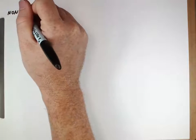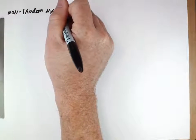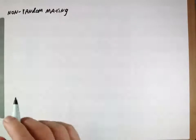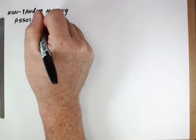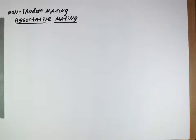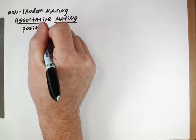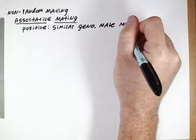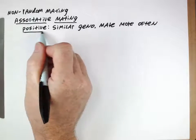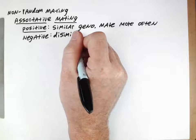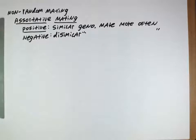Our next evolutionary process that we'll be looking at is non-random mating. You'll recall one of the assumptions of the Hardy-Weinberg equilibrium scenario was that all mating was random. In particular, we'll be looking at a phenomenon called assortative mating. Assortative mating is when individuals sort themselves into different mating groups. There's positive assortative mating, where similar genotypes mate more often with one another, and negative assortative mating, where dissimilar genotypes mate more often.